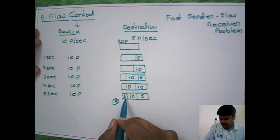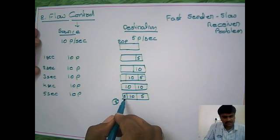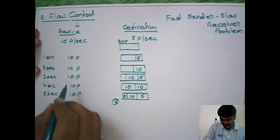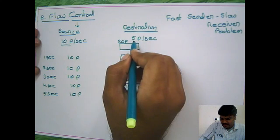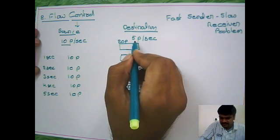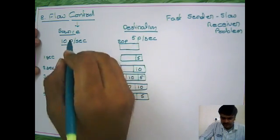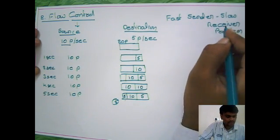The problem is that there is no space left in the buffer. The source is sending 10 packets per second, but the destination cannot keep up — it cannot match the source's speed. This is the fast sender, slow receiver problem.